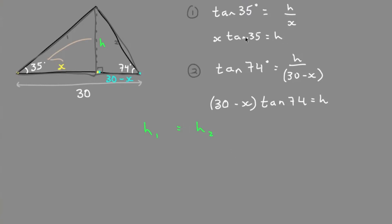So the height of the triangle 1 on the left equals the height of triangle 2 on the right. Our equation 1 has height solved as x tan of 35, and our equation 2 says the height equals 30 minus x times tan of 74. Therefore, these two expressions are equal.